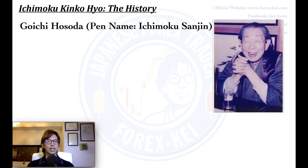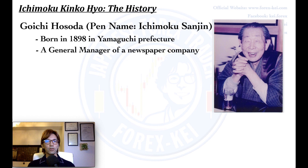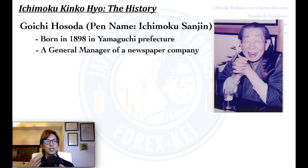Anyways, Ichimoku Sanjin was born in 1898, and he was the most incredible chart analyst in Japan back in the early 1900s. Actually he was a general manager of the sales department in one of the major newspaper companies in Japan, called Miyako newspaper back then, and now it's called Tokyo newspaper. It was the one that particularly dealt with economic news and daily chart analysis for forex and stocks markets on the newspaper — the most well known economic newspaper in Japan back then. But that was not when he started chart analysis. It's said that he started to analyze charts and trade ever since he was 10 years old. So he was not just a writer or analyst, but he himself was actually a successful trader and a successful investor.